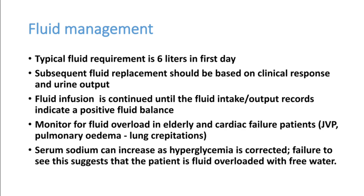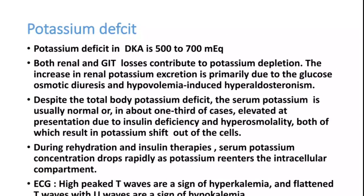Most DKA patients have a potassium deficit of around 500–700 mEq, from both renal and GI losses. This should be corrected before giving insulin. ECG can show peaked T waves as a sign of hyperkalemia, or flattened T waves with U waves in hypokalemia. The most common finding is hypokalemia in DKA. If potassium is very low, correct potassium first, then start insulin.